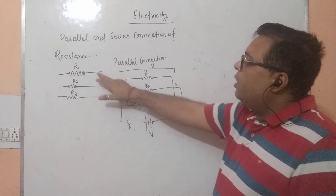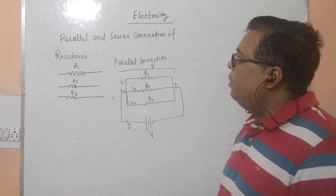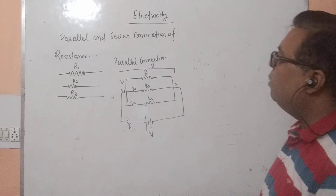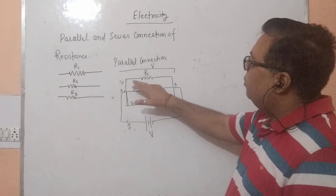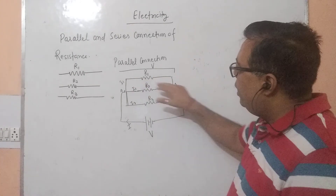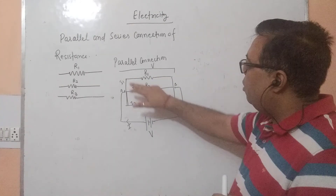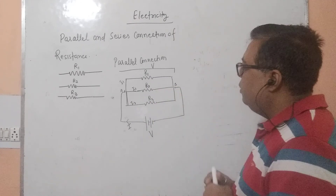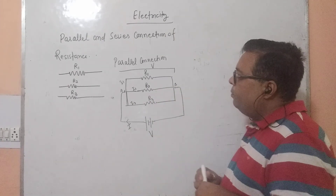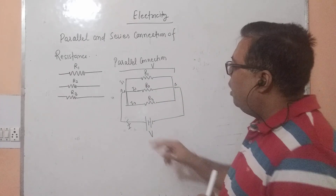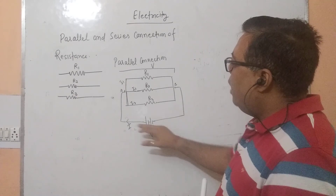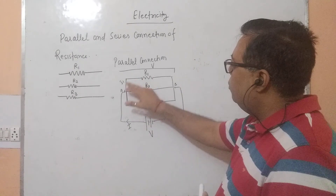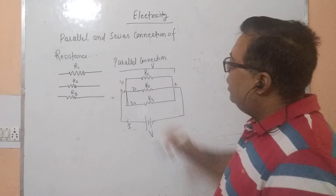Now, we have three resistances R1, R2, R3 and we have to connect them in parallel. According to this figure, you will connect R1, R2, R3 with our battery. When our current I starts to flow, it will be distributed to the different resistances.